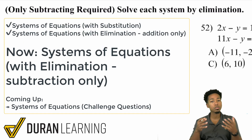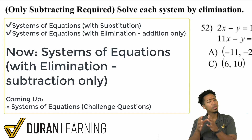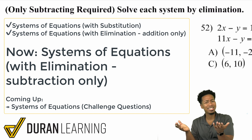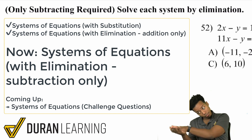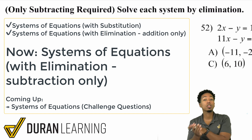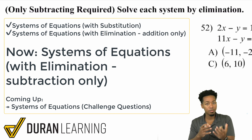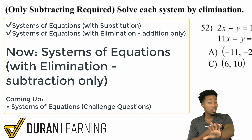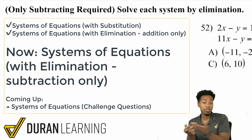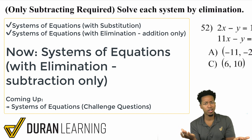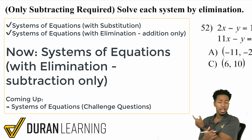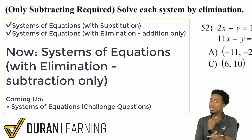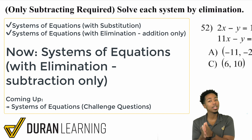This is a follow-up video from Systems of Equations Elimination, where with elimination we only really had to add the equations together. So if you haven't watched that video already, please go ahead and watch that. Because what we're going to be doing now in this video is the other type, where you have variables with the same coefficients but the same sign rather than opposite signs.